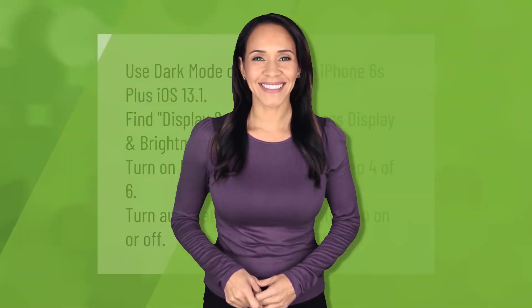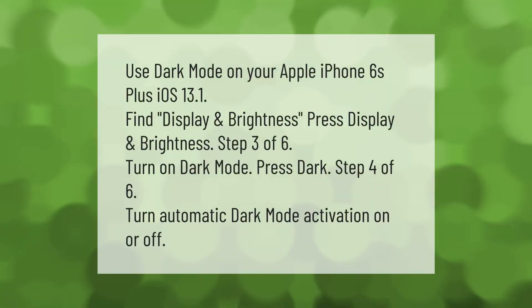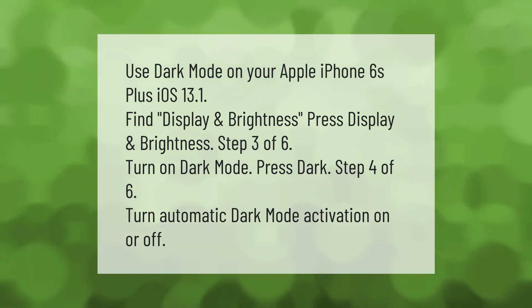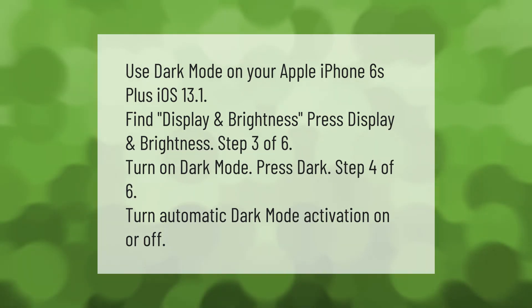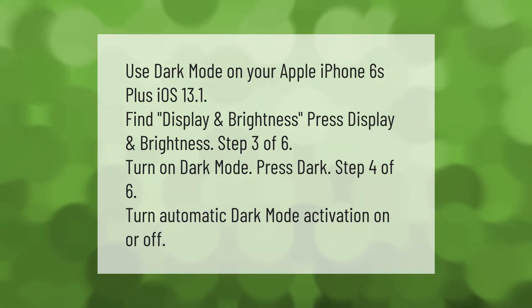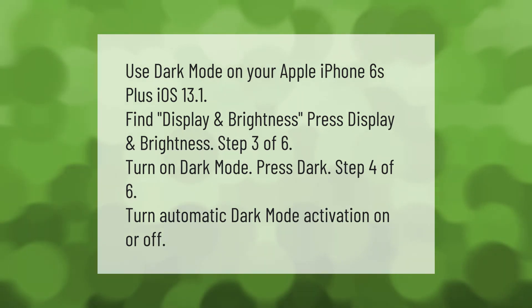To use dark mode on your Apple iPhone 6s Plus with iOS 13.1: find Display and Brightness, then press Display and Brightness. Step three: turn on dark mode by pressing Dark. Step four: turn automatic dark mode activation on or off.